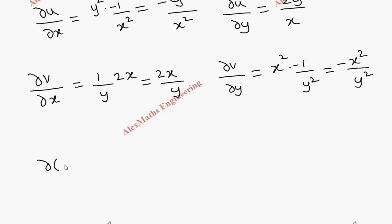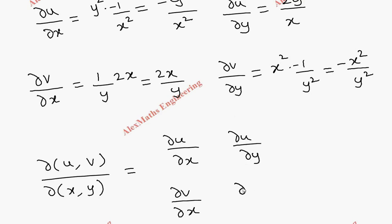For evaluating ∂(u,v)/∂(x,y), we are going to use a determinant where the elements are ∂u/∂x, ∂u/∂y in the first row, then ∂v/∂x, ∂v/∂y in the second row.